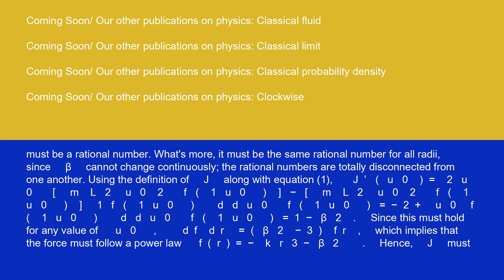Using the definition of J along with equation 1, J'(u₀) equals 2u₀ (m/L²)u₀²F(1/u₀) minus (m/L²)u₀²F(1/u₀) (1/F(1/u₀)) (d/du₀)F(1/u₀) equals minus 2 plus (u₀/F(1/u₀)) (d/du₀)F(1/u₀) equals 1 minus β².